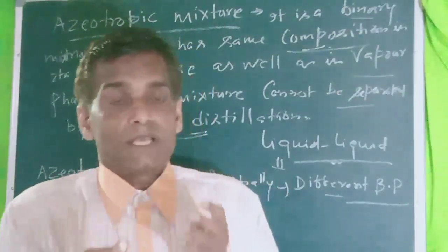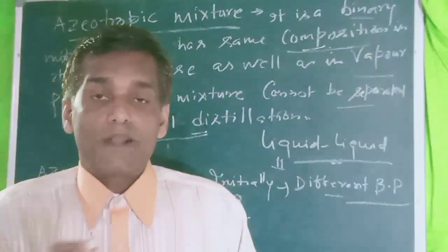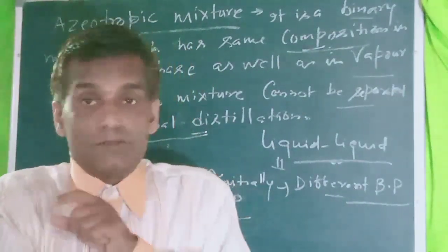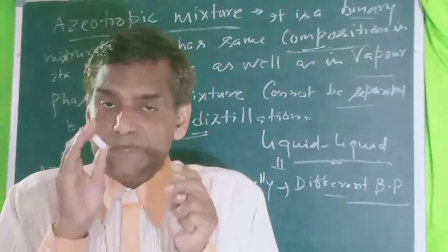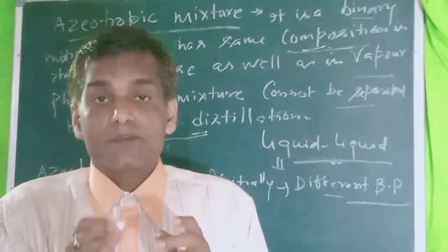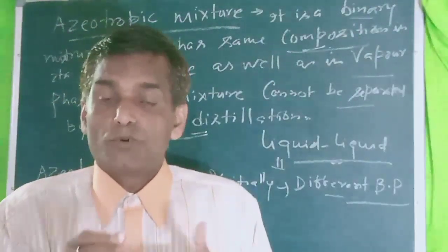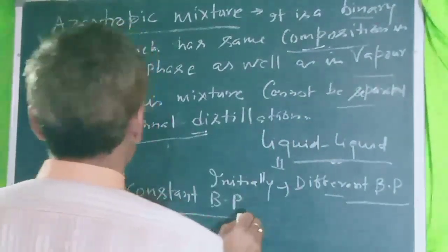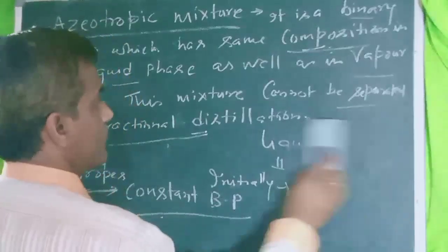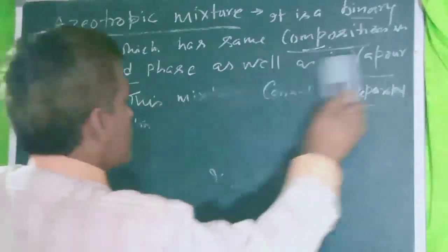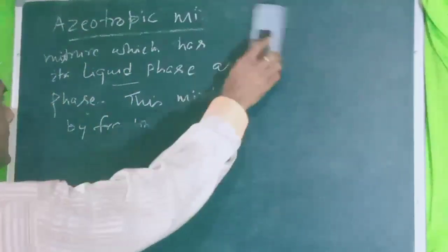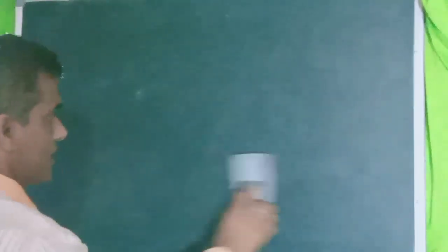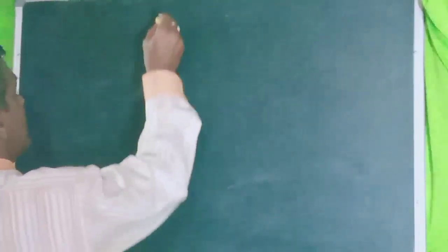For example, ethanol and water form azeotropes. Now, we have two types of azeotropes. These two types are: minimum boiling azeotropes and maximum boiling azeotropes. Boiling point is very important here. According to azeotropes we have these two parts.